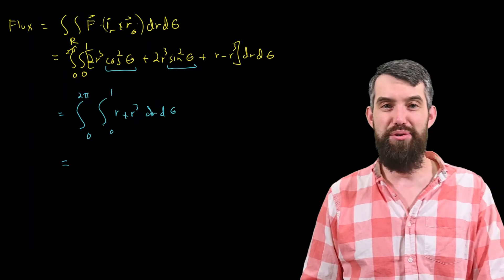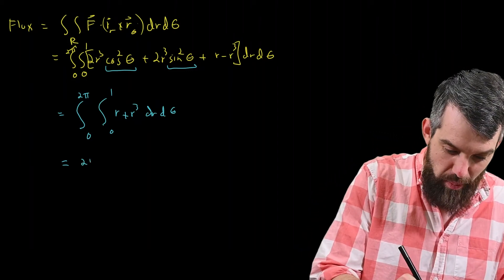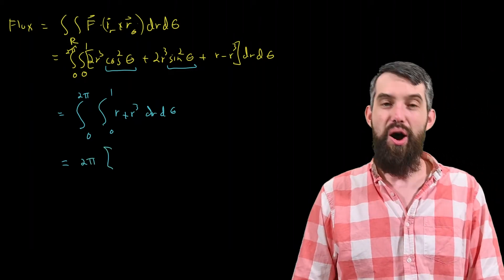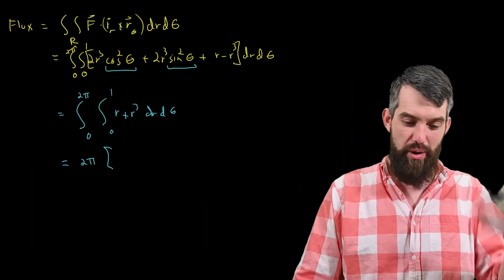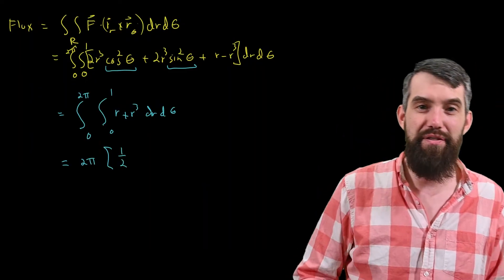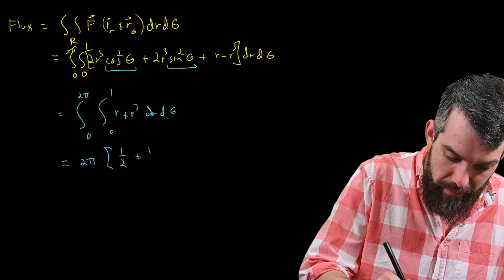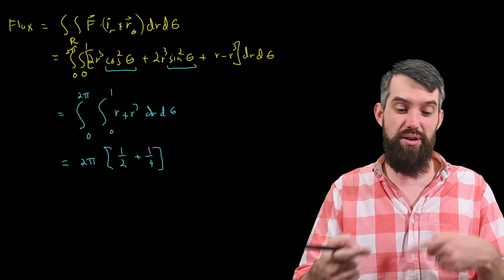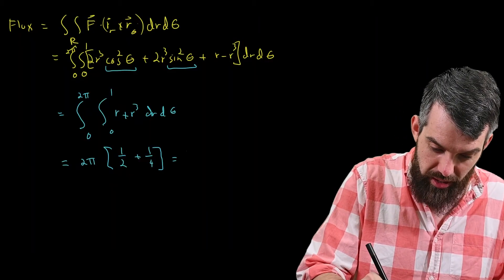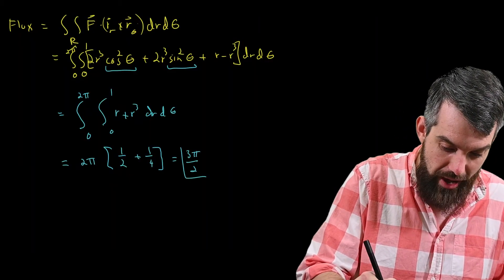Which, well, the outer integral, there's no thetas involved, so I'll just put the 2 pi out in front of this. r is going to become r squared over 2 between 1 and 0, which is 1 half. r cubed is going to become r to the fourth over 4, between 0 and 1 is a quarter. Which gives me 3 quarters times 2 pi, in other words, 3 pi divided by 2, final answer.